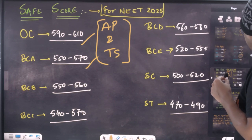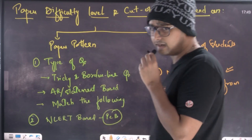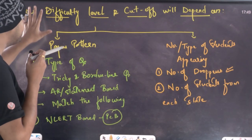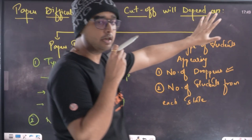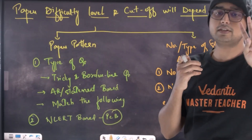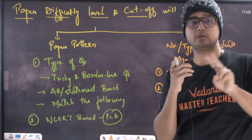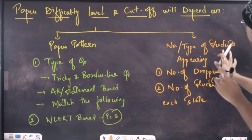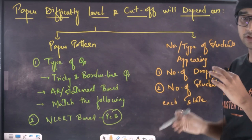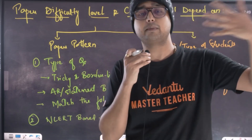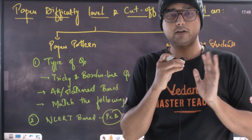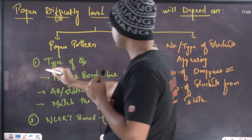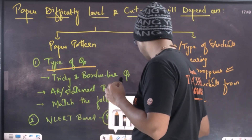Now, going further — the paper difficulty level — there is a basic confusion that we have to clarify clearly. The paper difficulty level and the cut-off depend on two things: one is the paper pattern, and two is the number and type of students appearing. L&T type of questions will focus on basic concepts.